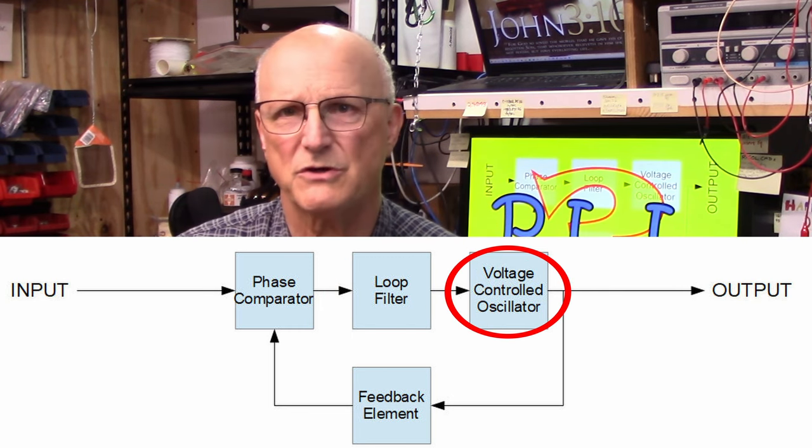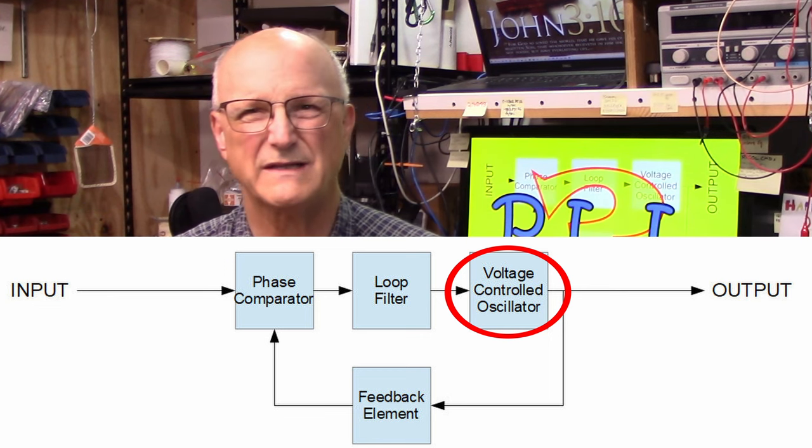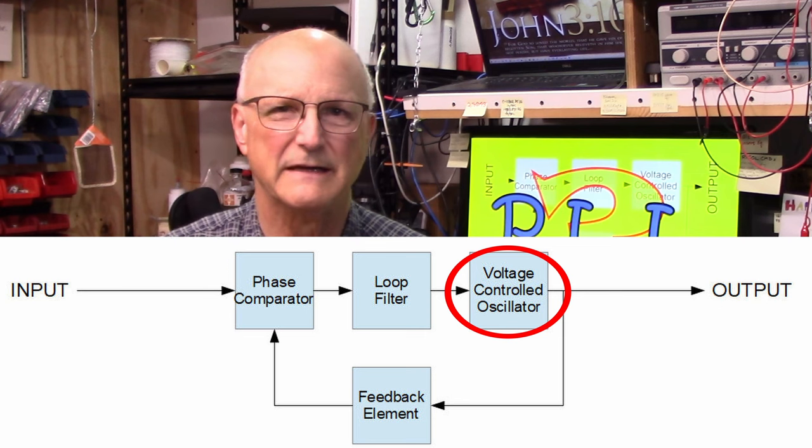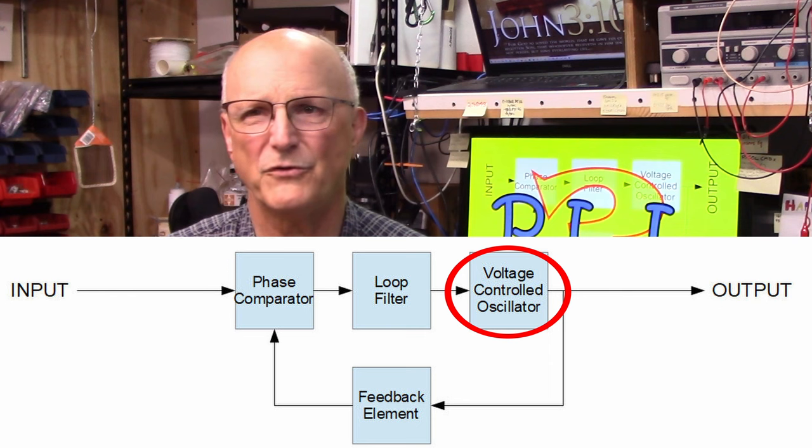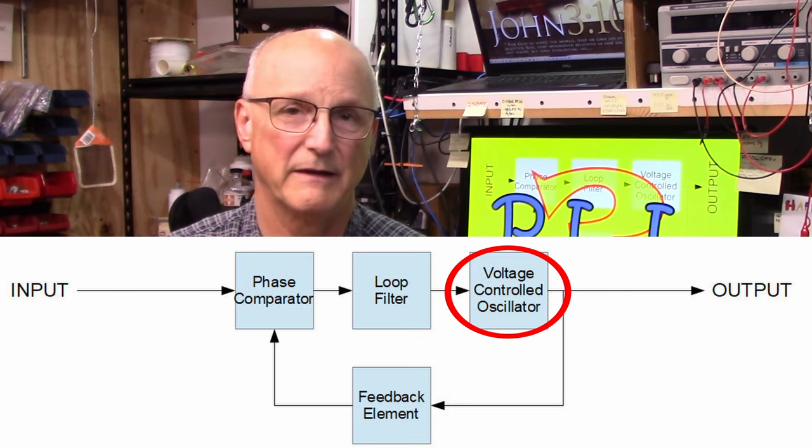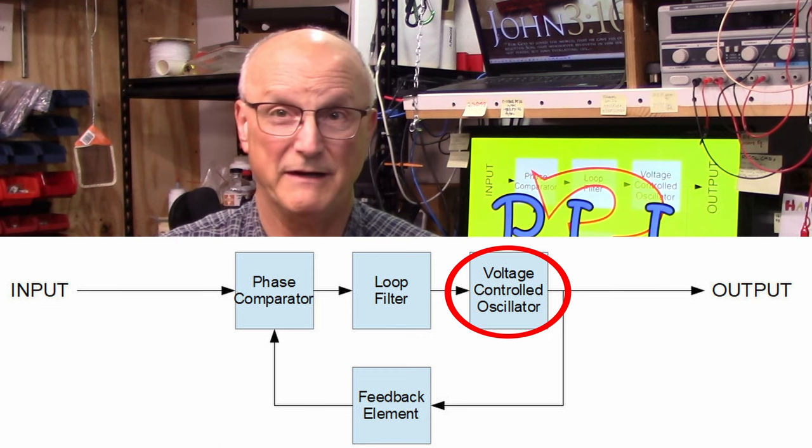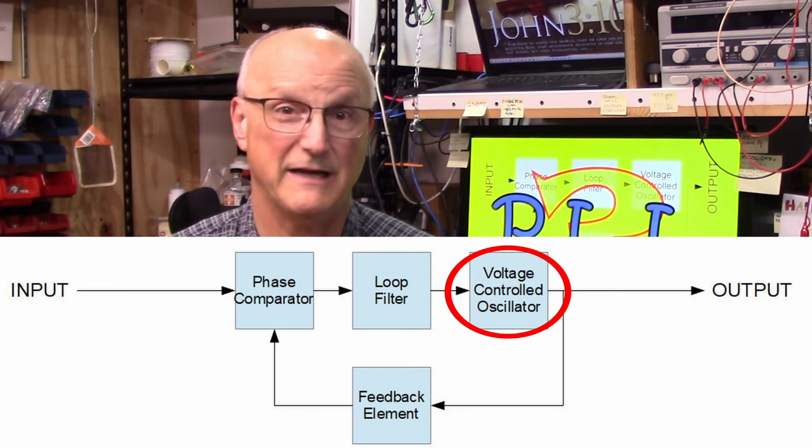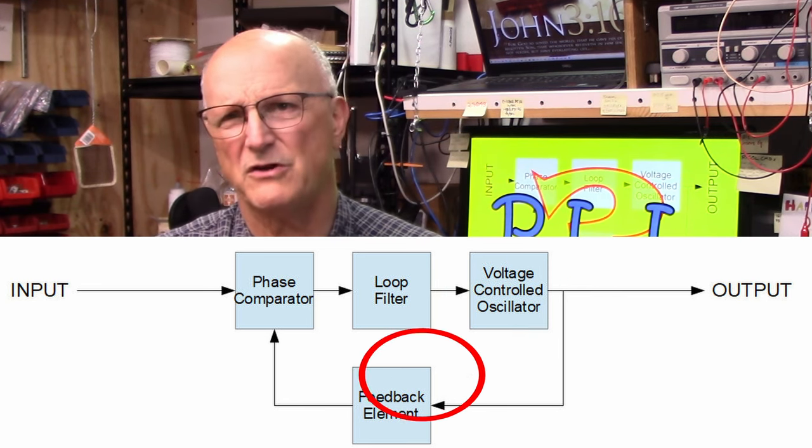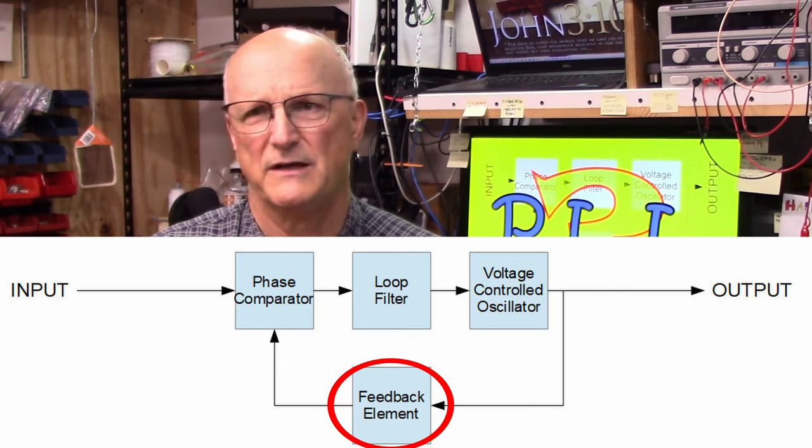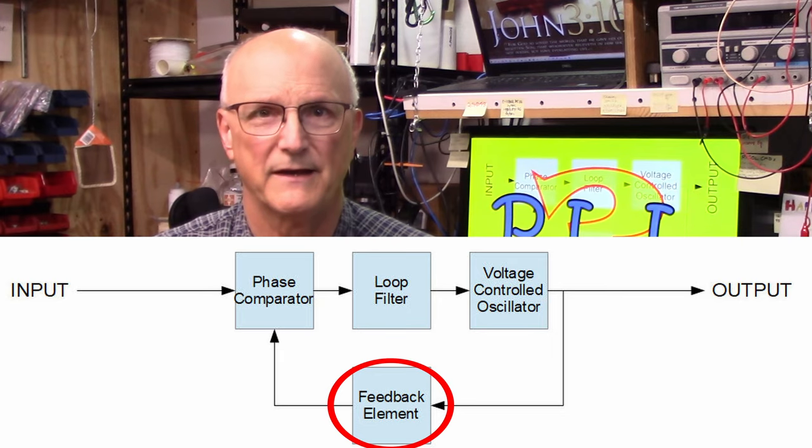Now we come to the voltage controlled oscillator or VCO. What's a voltage controlled oscillator? It is a signal source whose output frequency is controlled by the voltage provided on its input. While it would be really ideal to have this be a linear relationship, this isn't always necessarily the case in every instance. Lastly, we address what I'm going to call the feedback element. This could be any one of a number of things, including a frequency divider.